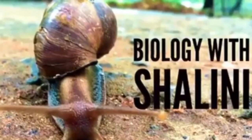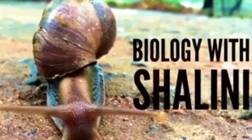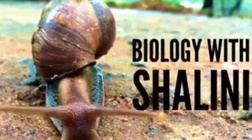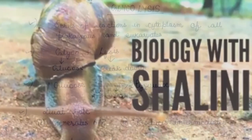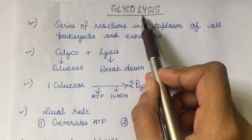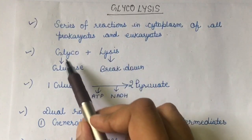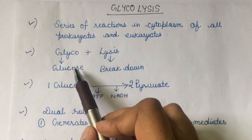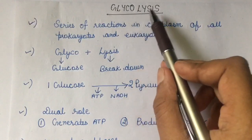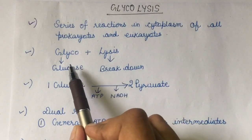Hello everyone, welcome back to another tutorial from Biology with Shalini. In this particular tutorial we are going to talk about glycolysis. Glycolysis is basically made up of two words: glyco and lysis, wherein glyco means glucose and lysis means breakdown. So glycolysis is the process of the breakdown of glucose.